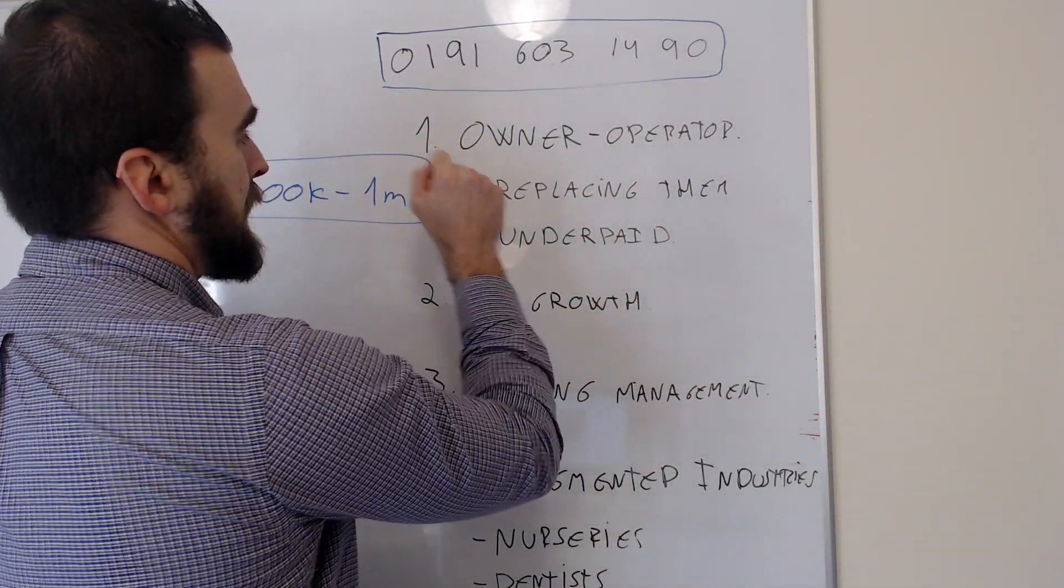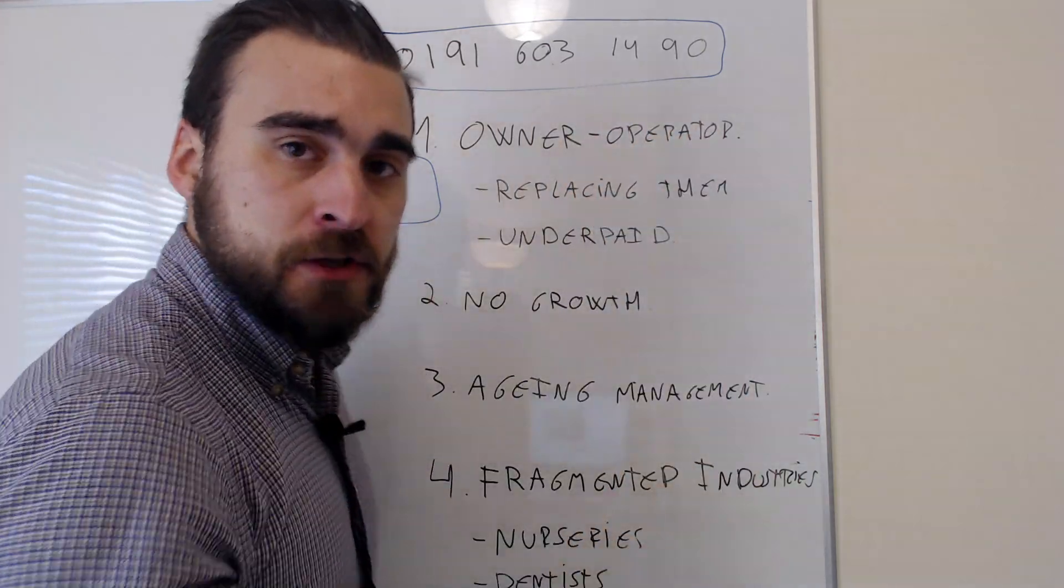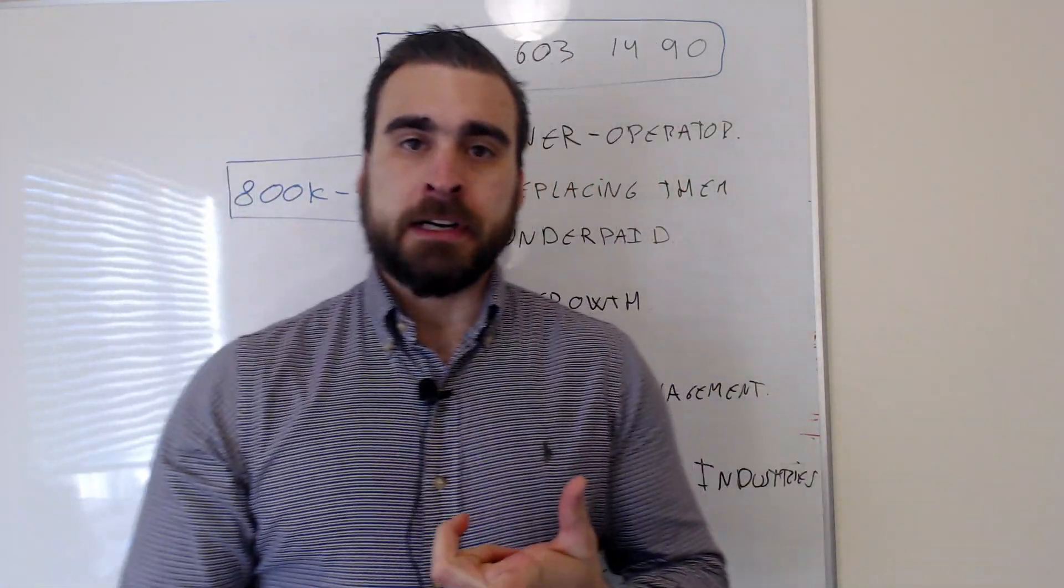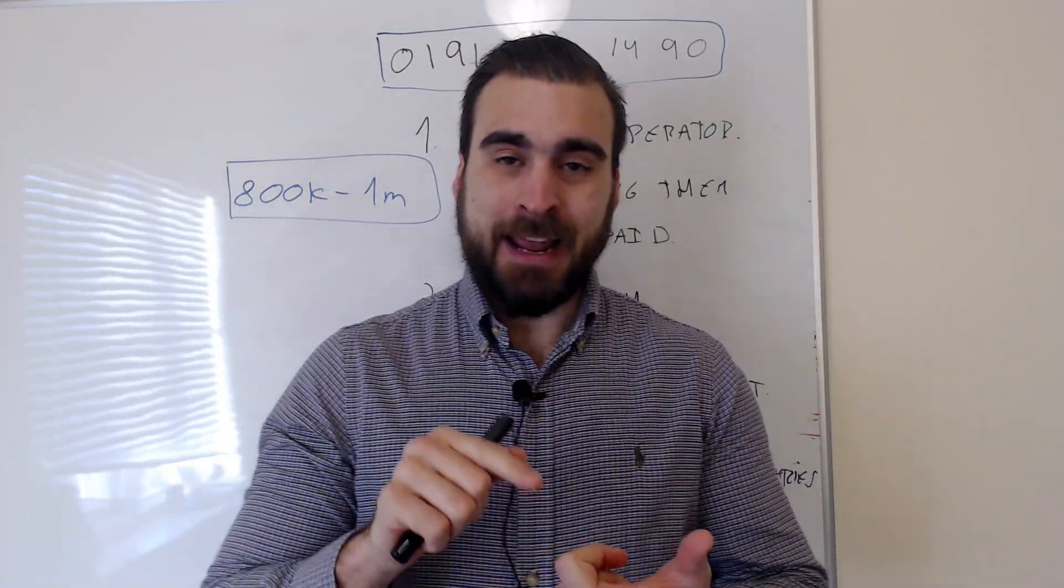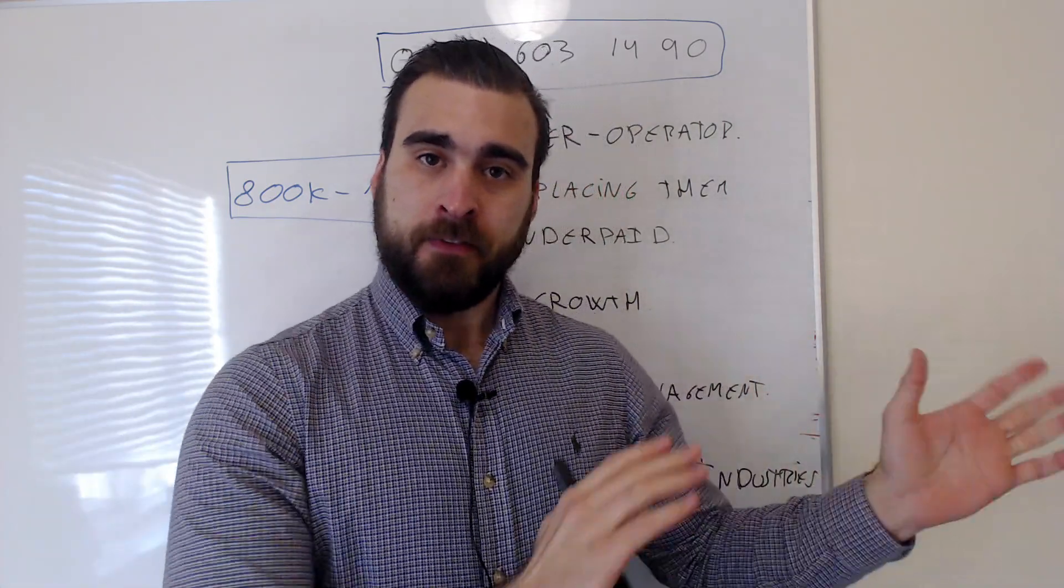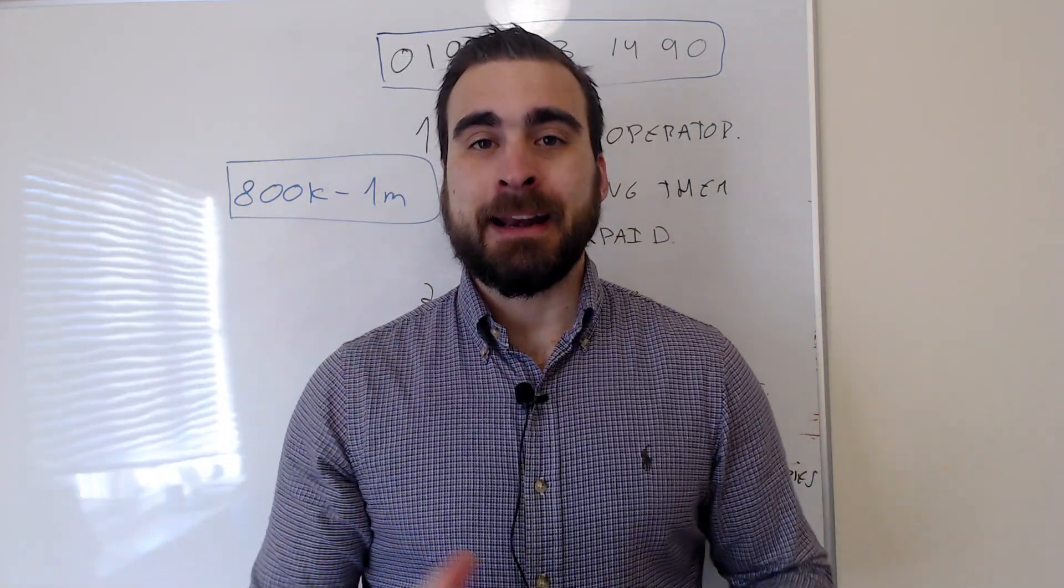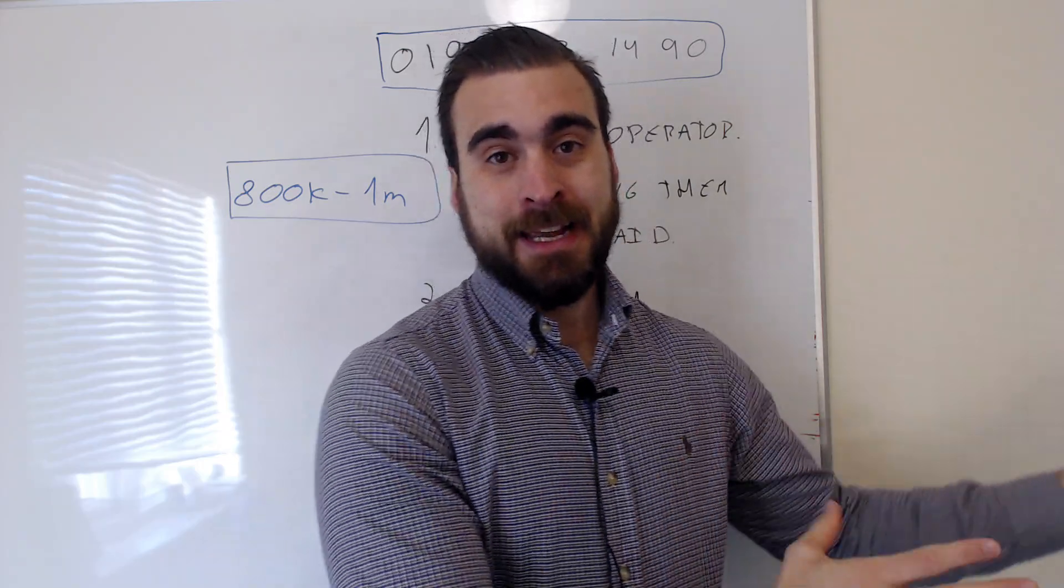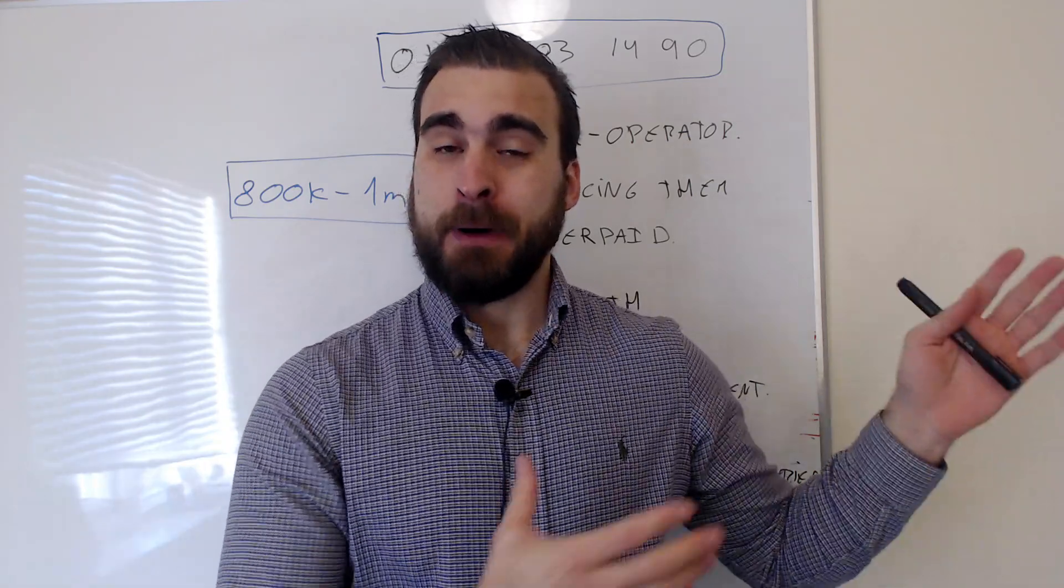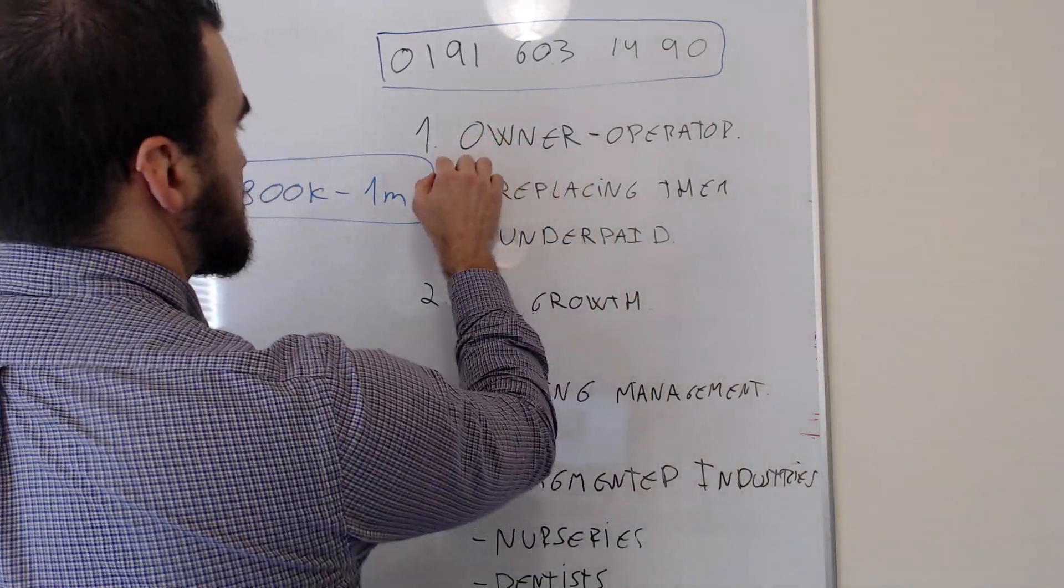Now the first characteristic that these close to a million companies have in this country is that they are owner operated. The same owner operator has been in the business working in the business, knows the ins and outs of that business for the past 10, 20, 30 years. They set up their business back in the day and they've been running and owning it and living from it.